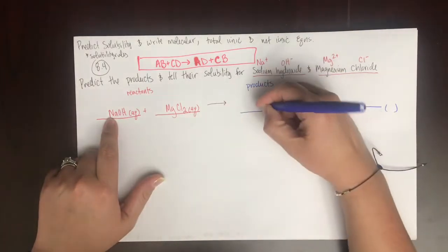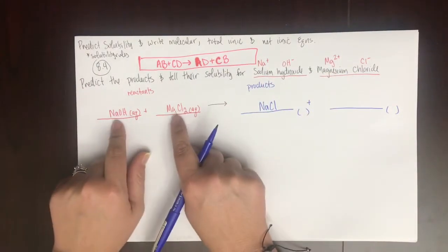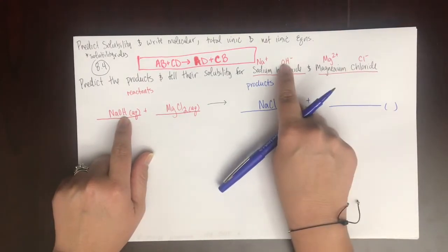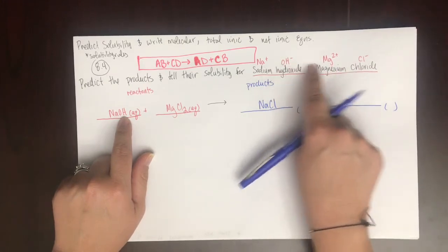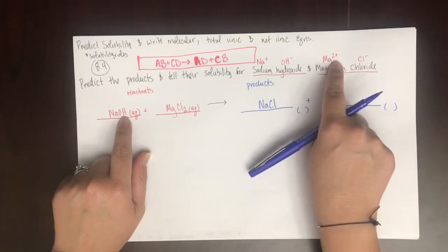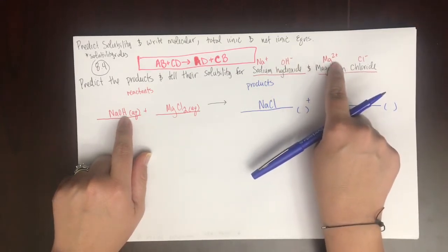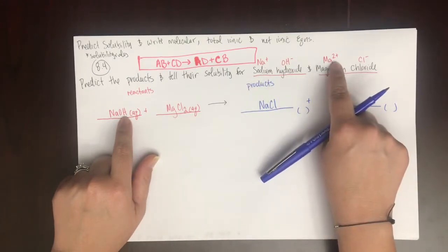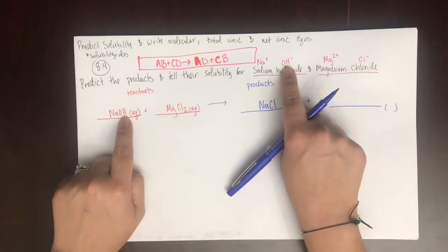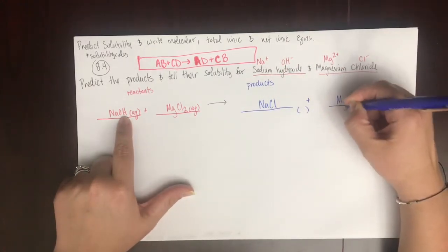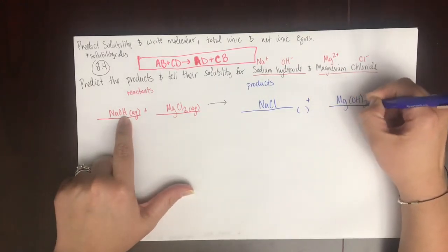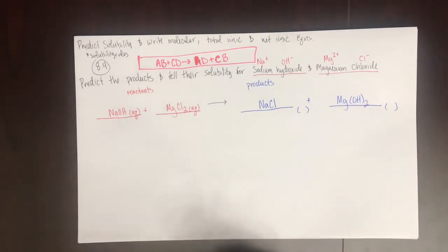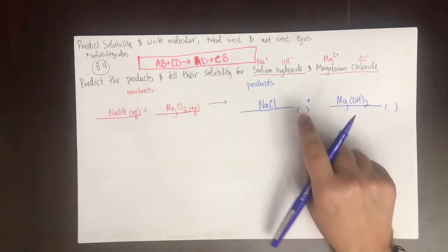So it's going to be sodium and chloride — NaCl — and then magnesium and hydroxide. Remember, magnesium must come first because it's positive and hydroxide is negative. Don't write OHMG — that would be incorrect. The positively charged ion comes first, the negatively charged ion comes second. Magnesium is 2+ and hydroxide is 1−, so I need two hydroxides: Mg(OH)₂, with parentheses around OH to indicate two hydroxide groups.